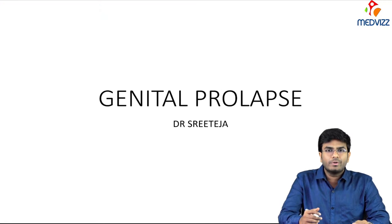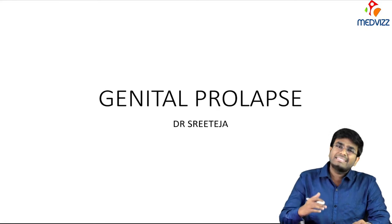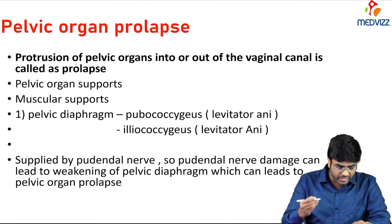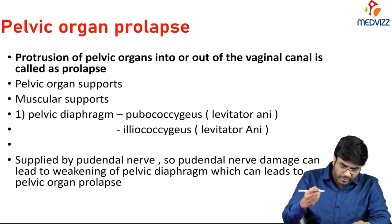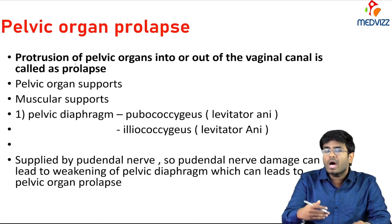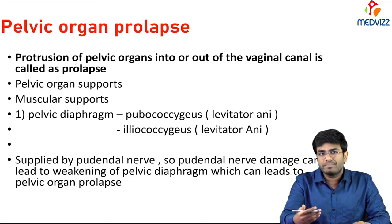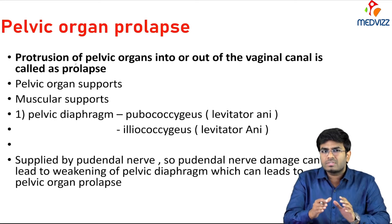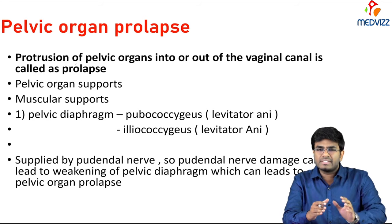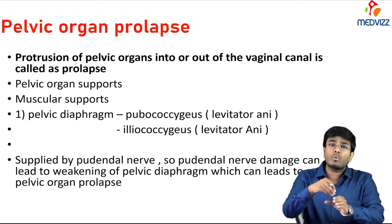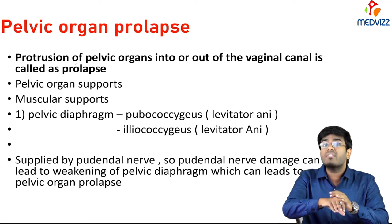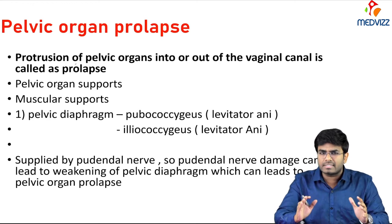In this video we'll be discussing genital prolapse. The definition is a protrusion of the pelvic organs into or out of the vaginal cavity. The pelvic organs which include the uterus and the cervix — if they are protruding into or out of the vaginal cavity for whatever reason, that is called genital prolapse.